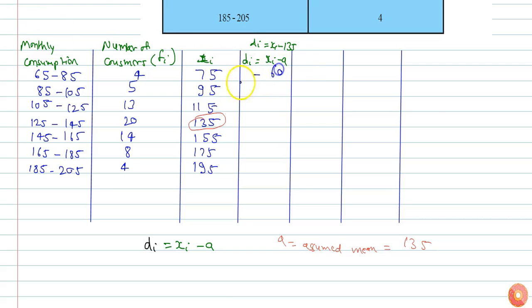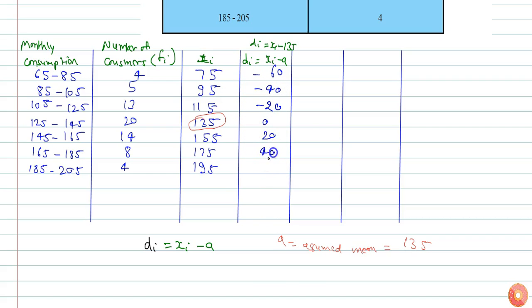95 minus 135 is minus 40. Similarly the deviations are minus 20, 0, 20, 40, and 60.